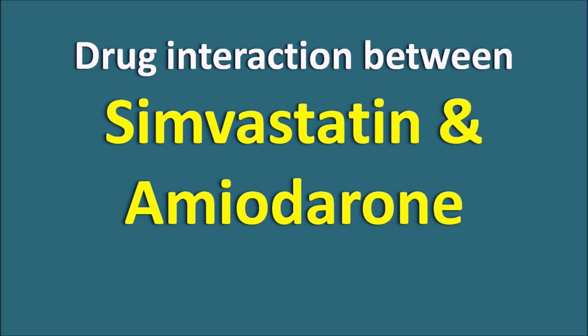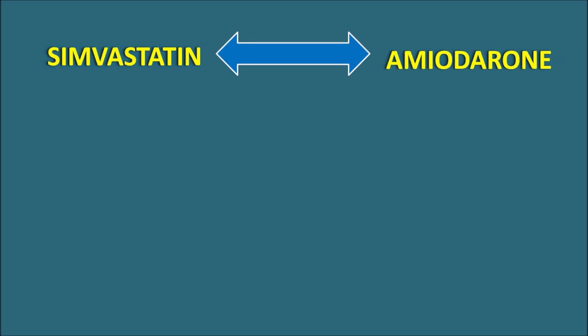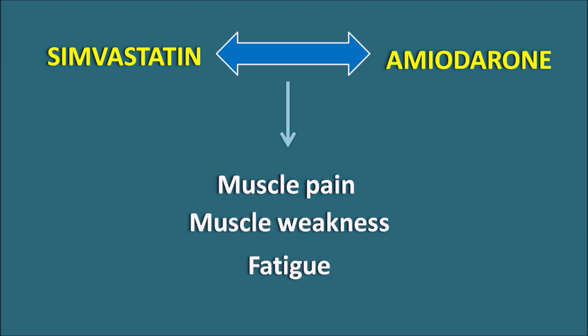Hi everyone. Today in this video we are going to discuss the drug interaction between simvastatin and amiodarone. Whenever simvastatin is given along with amiodarone, we can observe a few symptoms in patients — particularly muscle pain, muscle weakness, and fatigue. This drug interaction may also lead to muscle breakdown, and all of these symptoms may be related to simvastatin producing myopathy and rhabdomyolysis. So when simvastatin is given along with amiodarone, the side effects of simvastatin are more pronounced.